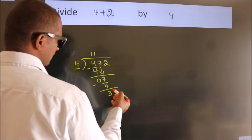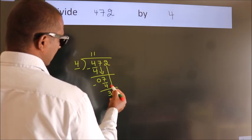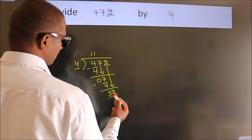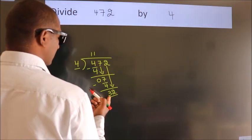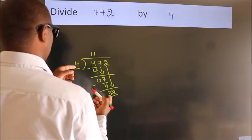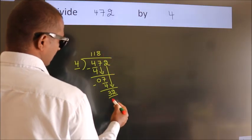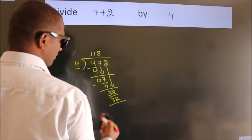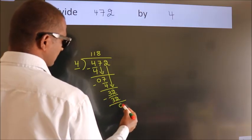After this, bring down the beside number. So 2 down. So 32. When do we get 32? In 4 table. 4 8s, 32. Now we subtract. We get 0.